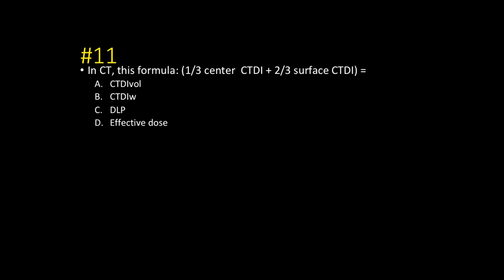Number eleven: in CT, the formula one-third the center CTDI plus two-thirds the surface CTDI gives you the weighted CTDI average. Most of the energy is deposited into the surface of the phantom or patient, so the surface component is more heavily weighted than the center.